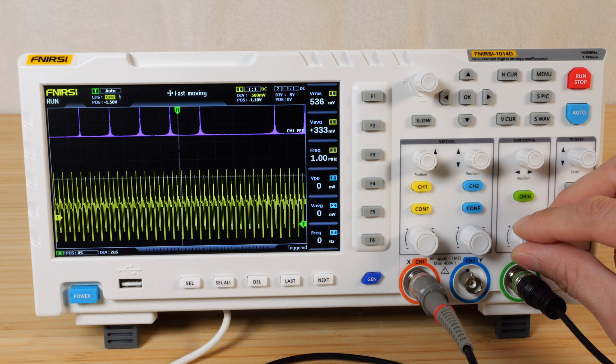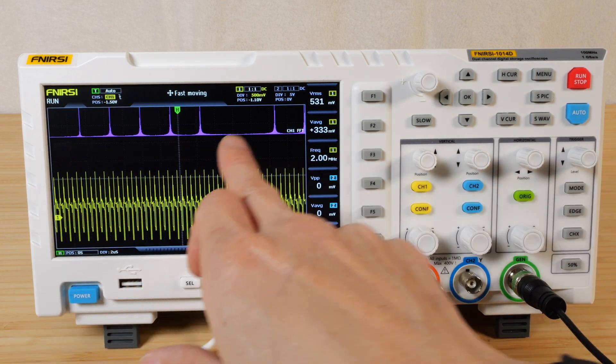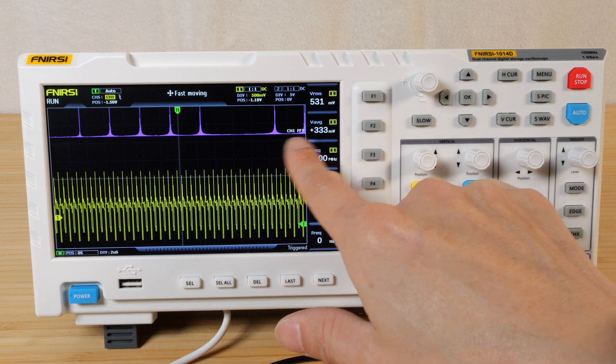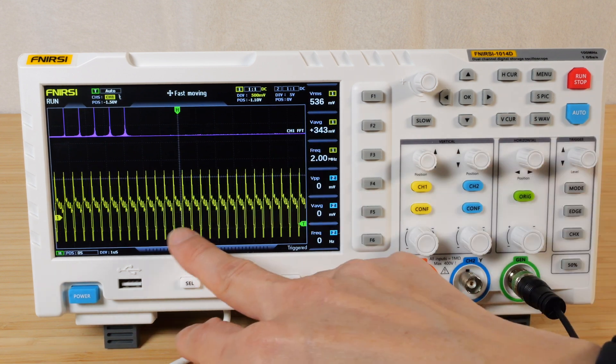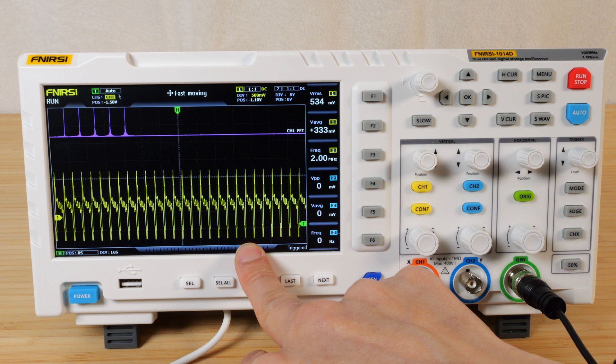But if I zoom out one more time, we now have 1, 2, 3, 4, 5, 6, 7. This is an image and these frequencies actually are not really there. So that's a limitation of basic digital signal processing.